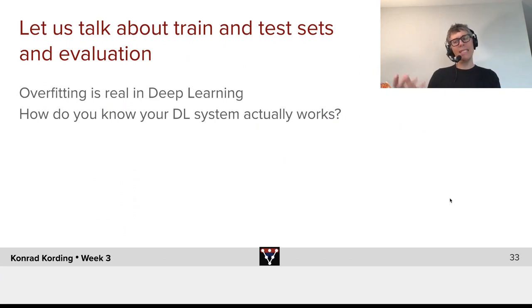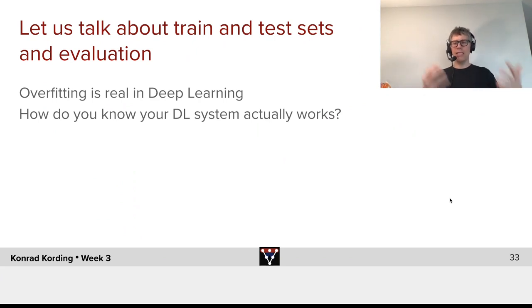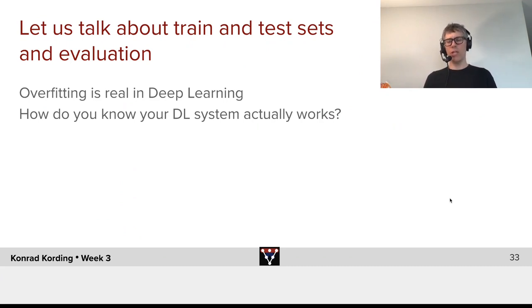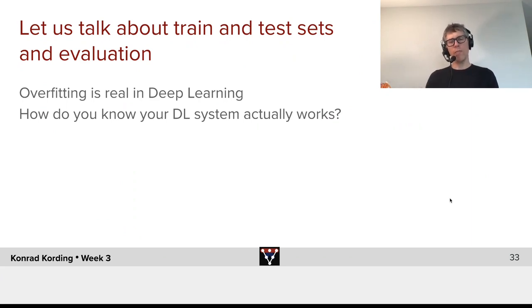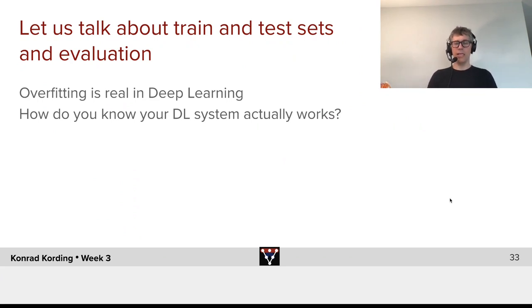You might think, oh, but my dataset is big. But don't forget about the number of parameters that you have. In deep learning, we are almost never in the domain where we should expect that we will not be overfitting. In fact, when you look during training, you will often plot how well you do on the test set and the training set — you are always doing much better on the training set. We should expect that, because we just have so many free parameters.